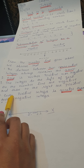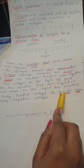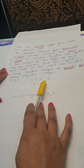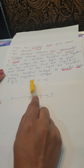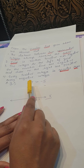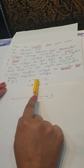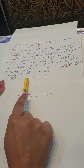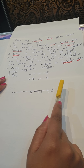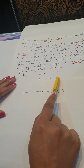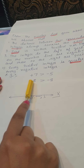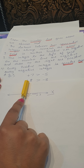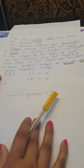Next point: every positive integer is greater than every negative integer. This is very important. For example, plus 7 is greater than minus 5. If both numbers have the same numerical value but different signs — one is plus and one is minus — then the positive sign is always greater than the negative sign.